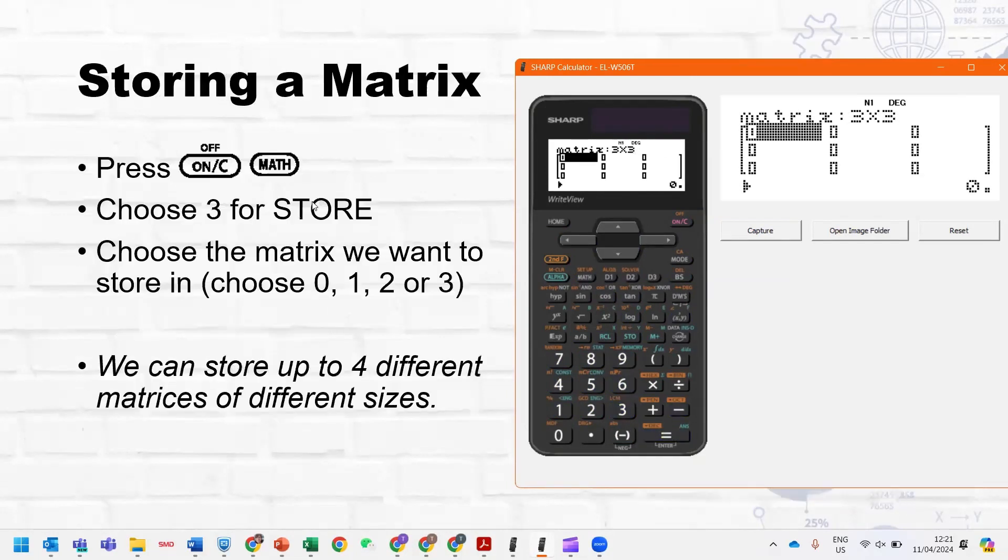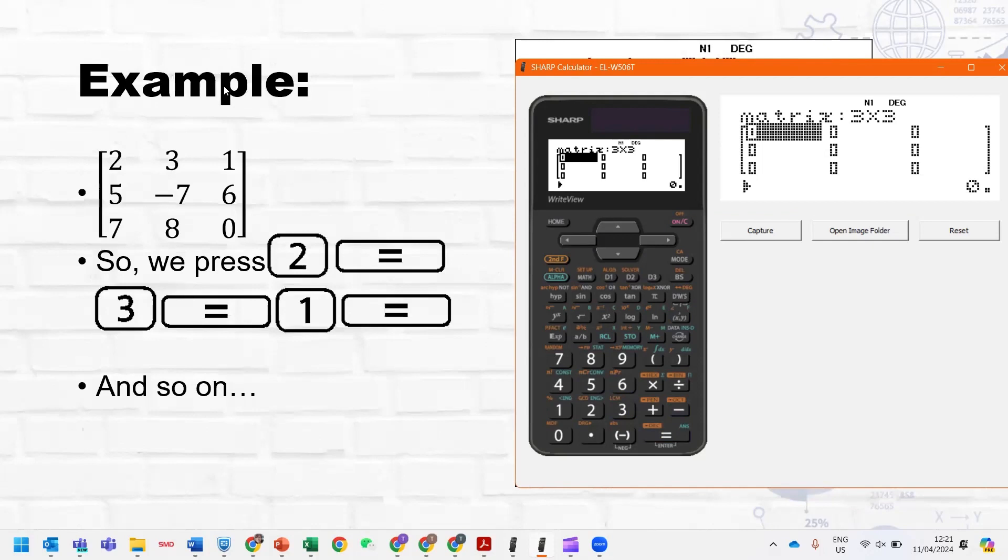All right, once that's done, you're going to then store the matrix into your calculator, and so it is imported in a row-by-row format, so we'll type in two, and then equals three, equals one, equals five, equals minus seven, equals six, equals seven, equals eight, equals and zero, you don't need to press equals for it, and you can just leave this.